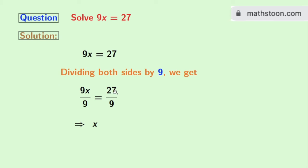And in the right hand side, we have 27 by 9 which is equal to 3. So finally we get x equals 3 as our answer.